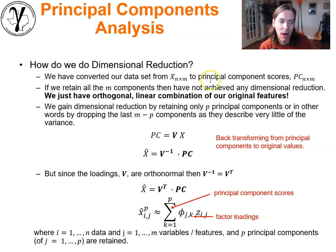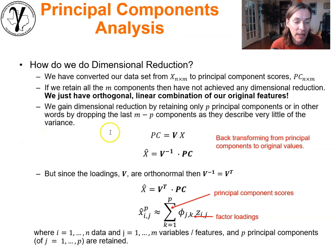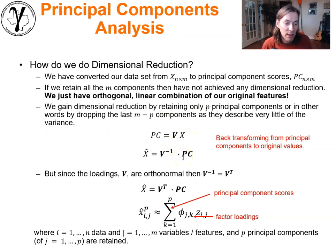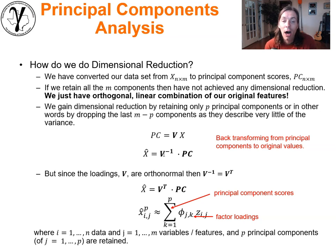We gain dimensionality reduction by retaining only p principal components — dropping the m minus p components that describe very little variance. The back-transformation is interesting: we take the inverse of the V matrix applied to our principal components to get an estimate of our original centered or standardized data.